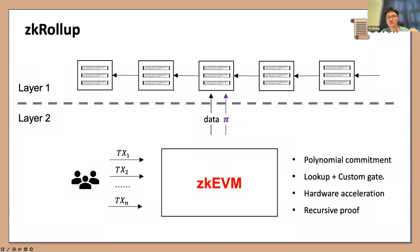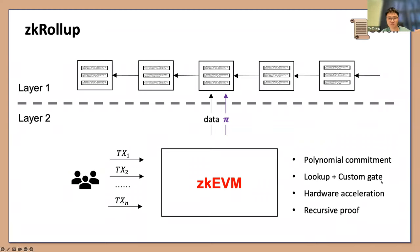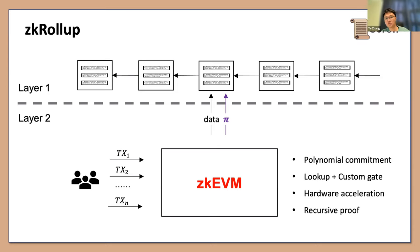Lookup arguments can easily handle RAM — verifiable read and write — by having a table and looking up elements into it. Custom gates let you write high-degree constraints. Using lookup and custom gates, you can make your circuit representation for EVM perhaps one or two orders of magnitude smaller than before. Third is hardware acceleration — the prover is costly, but the proving algorithm is highly parallelizable, which means you can use GPU, FPGA, or ASIC to make the proving process significantly faster. With hardware acceleration, you can make proof generation one or two orders of magnitude faster.